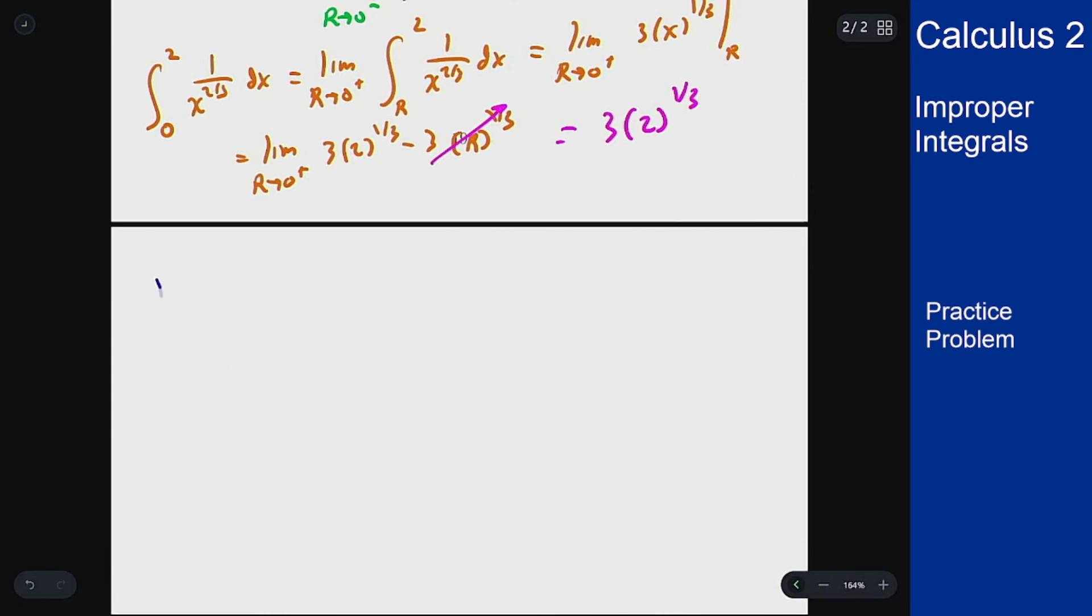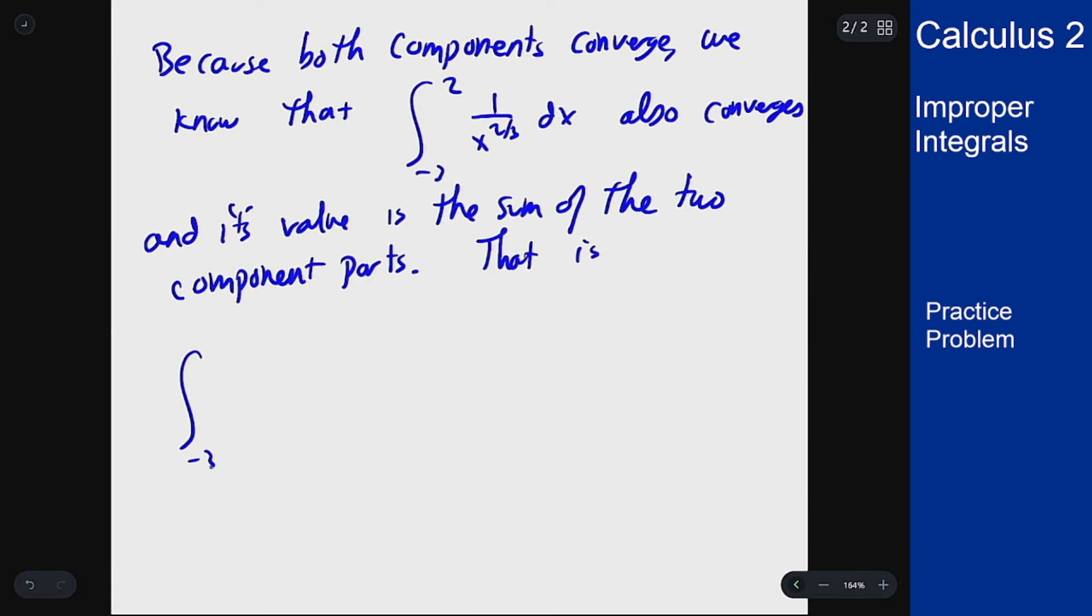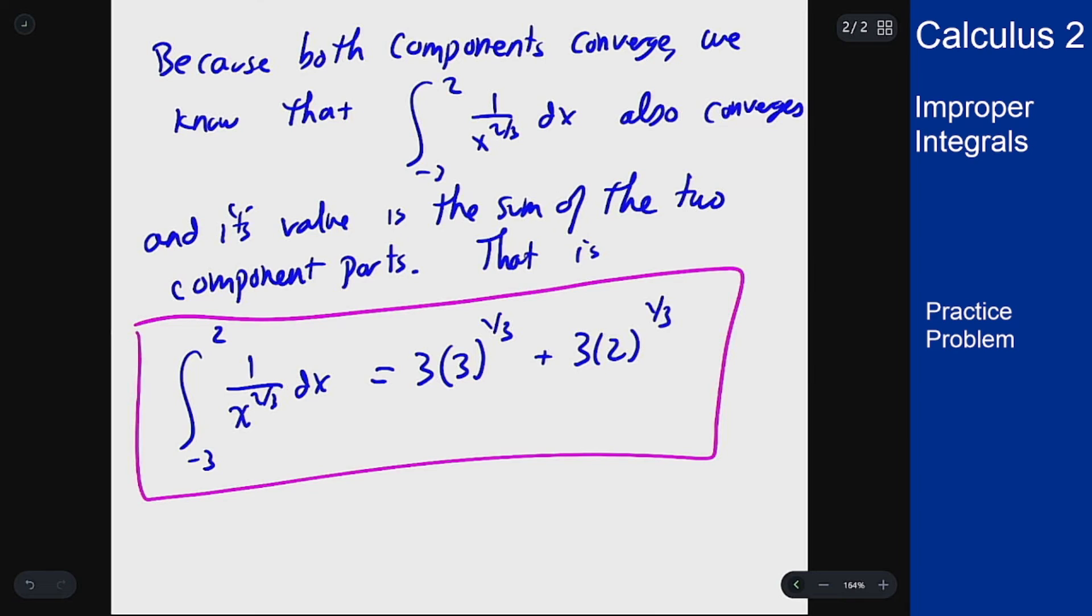Because both components converge we know that the full integral also converges and its value is the sum of those two component parts. That is integral minus 3 to 2 of 1 over x to the 2 thirds dx is equal to 3 cube root of 3 plus 3 cube root of 2.